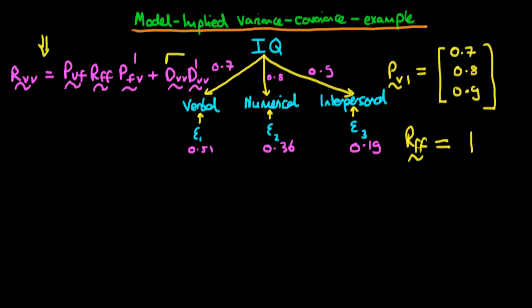What about this term here, which is DVV times DVV primed? Well, we've already been given, essentially, what these numbers are. Essentially, DVV times DVV primed actually gives us a matrix whereby the diagonal elements correspond to the variances of these particular errors. So in this circumstance, we're going to have 0.51, 0.36, and 0.19 as the diagonals.